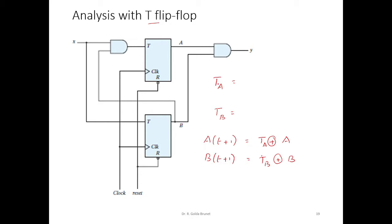So what is TA? We have X here, this line is from B, so this input is B, so we have BX here for TA. And TB will be, we have X directly. So this is X.